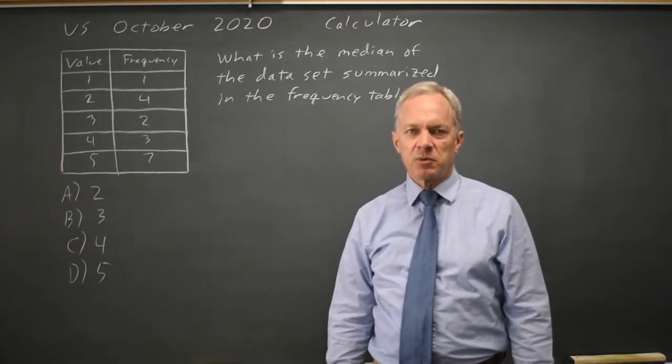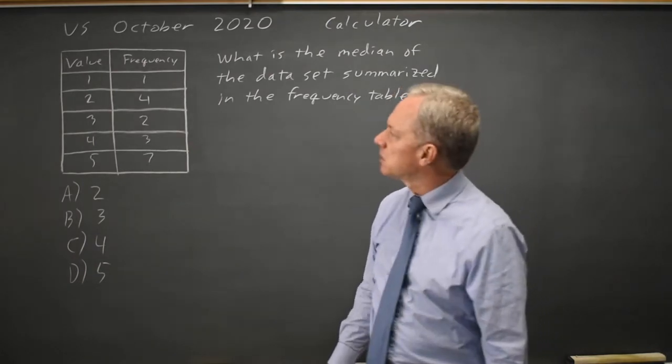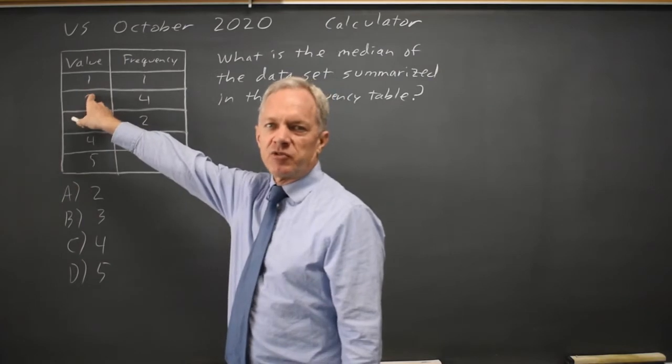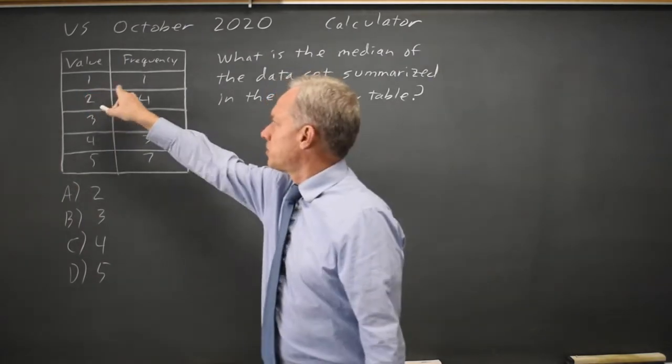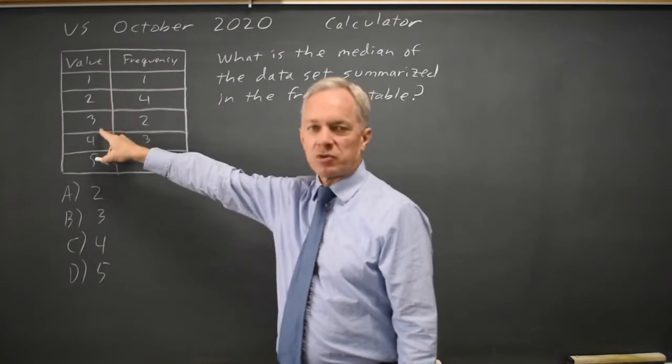The median is the middle number when the numbers are listed in order from smallest to largest. And the frequencies indicate how many times each value appears. So the value one appears one time, the value two appears four times, the value three twice.